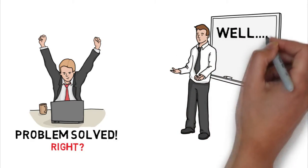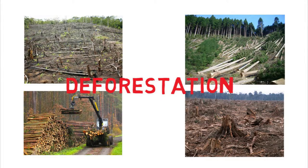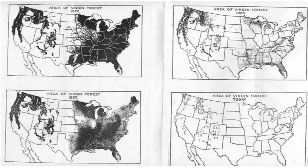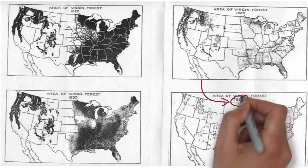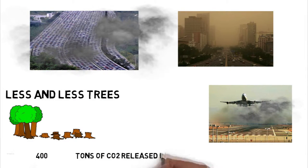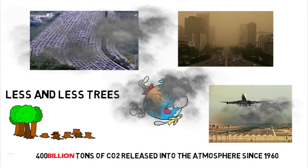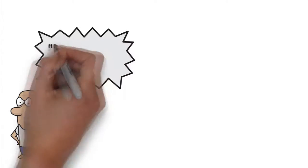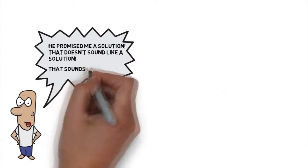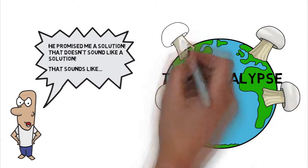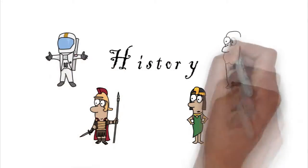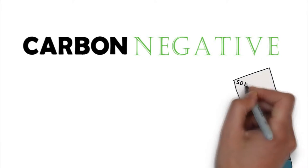There is this one little hiccup: deforestation. Here's an image showing the rate of deforestation of virgin forests just within the United States. Couple that with ever-increasing levels of carbon emissions and less and less trees to absorb it all, and you begin to see the picture. No more doom and gloom — now that you know a little history, it's time to explain carbon negative and why it's so important.